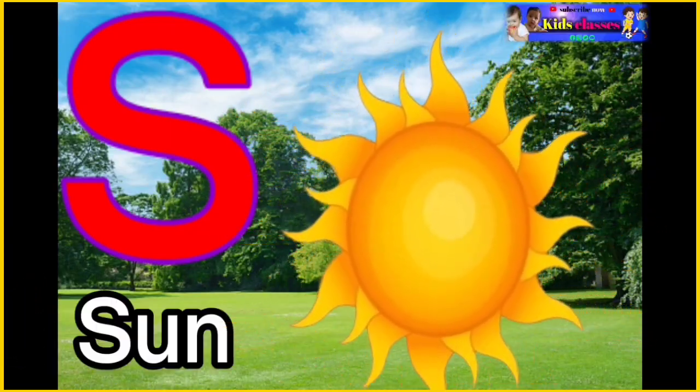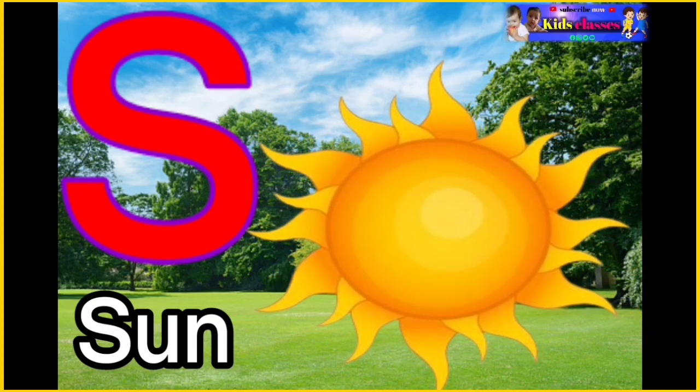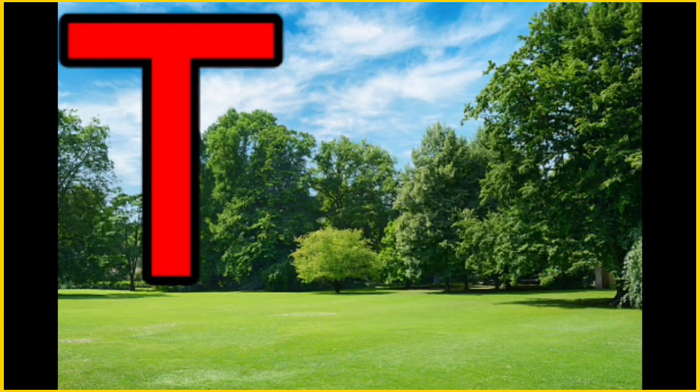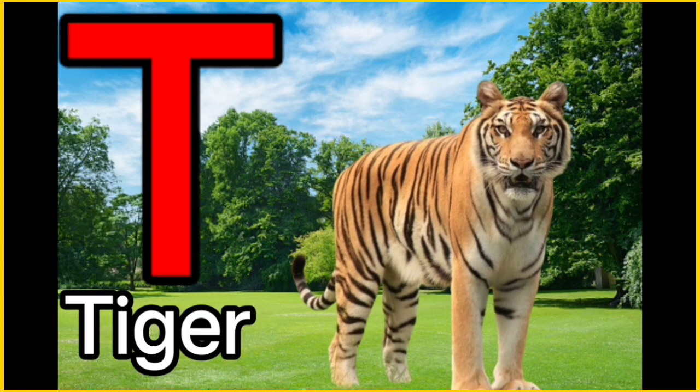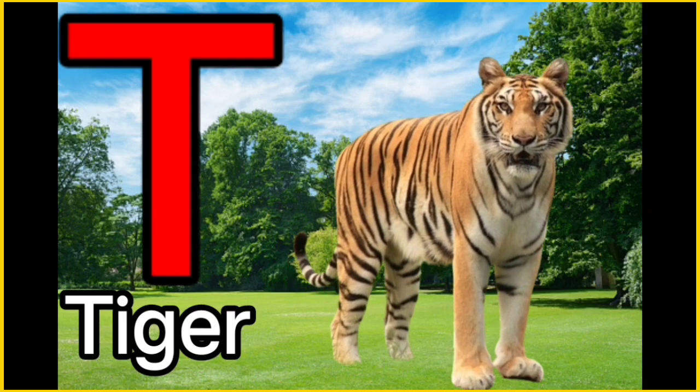S for sun. Sun means Shuriye. T for tiger. Tiger means Vaag.